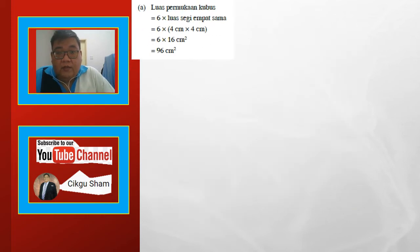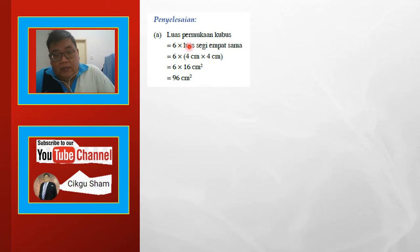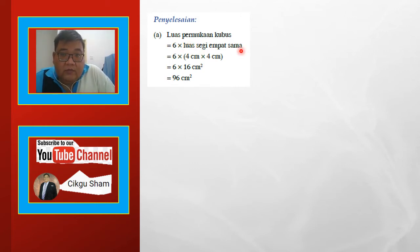Kita balik kepada penyelesaian contoh tadi. Untuk A — luas permukaan kubus: 6 darab luas segi 4 sama, sebab dia ada 6 segi 4 sama. Luas segi 4 sama tu 4 darab 4, jadi 6 darab 16 adalah 96.